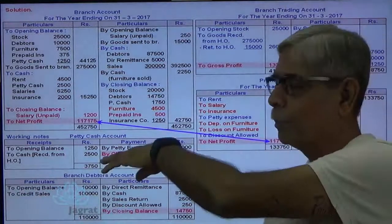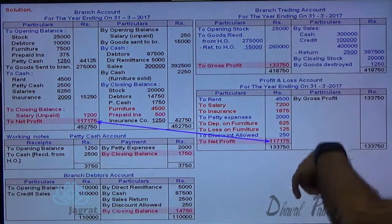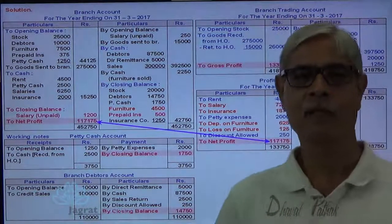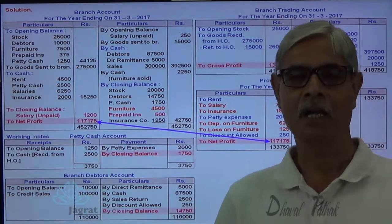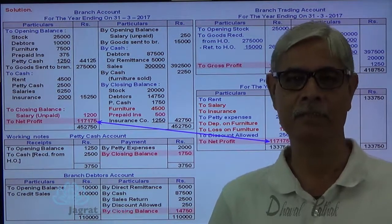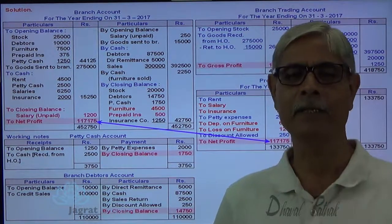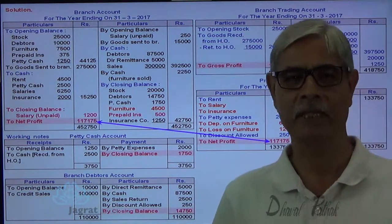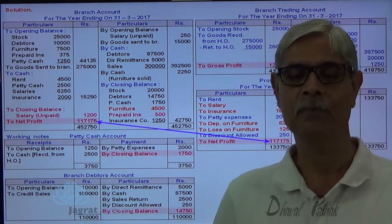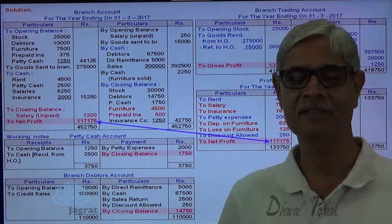This is how we have prepared branch account and found the profit. The same profit is found out by preparing trading and profit and loss account. I have tried to explain this sum, which is solved by data system but holds certain very important and tricky points — that is why I selected and solved it here before you. I have tried to explain these points and I feel that you have followed all these things. Thanks.